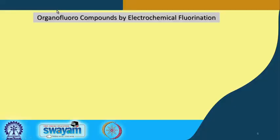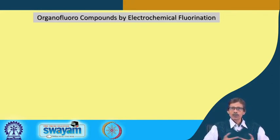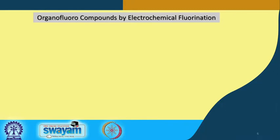Welcome back to this class where we are talking about important fluorine-based compounds. We can now move to organofluoro compounds. Starting from polymers to typical pharmaceutical compounds, you can have C-H functions, and if we substitute those C-H functions with fluorine, the properties change drastically — from electronic properties, since fluorine is highly electronegative, to all other properties.